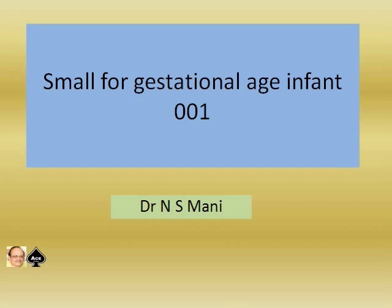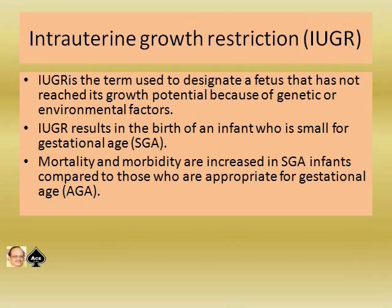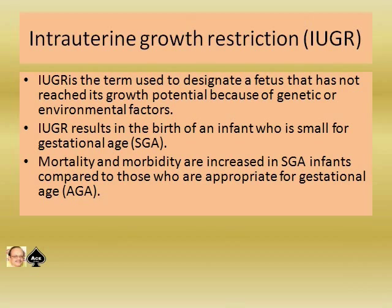In this presentation, I will discuss about the small for gestational age infant or IUGR baby, what is called intrauterine growth retardation or restriction. IUGR is the term used to designate a fetus that has not reached its growth potential because of genetic or environmental factors. IUGR results in the birth of an infant who is small for gestational age. Mortality and morbidity are increased in SGA infants compared to those who are appropriate for gestational age, or AGA.